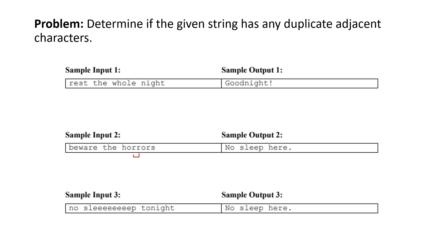This third sample case also demonstrates that even if there are multiple — more than two — pairs with more than two characters that are the same next to each other, as long as there are two or more, you should still output 'no sleep here.' In these cases where you need to output something very specific, you should copy the sample outputs into your program as opposed to manually typing them in.